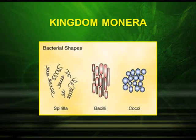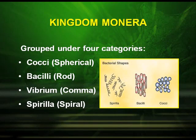Kingdom Monera is found everywhere and in extreme habitats. It is grouped under four categories based on their shapes: Cocci, which are the spherical ones; Bacilli, the rod-shaped ones; Vibrium, the comma-shaped; and Spirilla, the spiral-shaped.